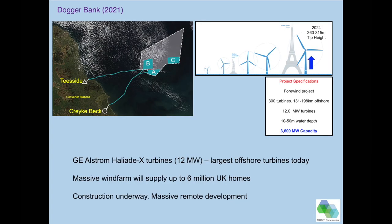The third case study is Dogger Bank, currently under construction. You can see three regions — the A, B, and C projects — tied back to two converter stations onshore at Teesside and Creekbeck. The wind turbines are getting on for the height of the Eiffel Tower, and with over 312 turbines at 12 megawatts each, the total capacity will be 3,600 megawatts. So we've gone from 5 to 93 to 3,600 megawatts. This wind farm alone will supply power for up to six million UK homes — the scaling up of projects is very significant.